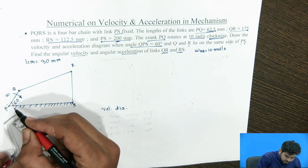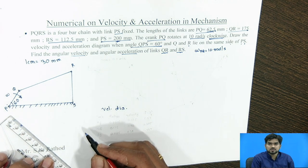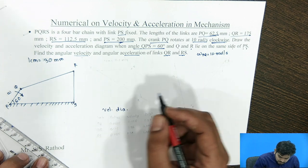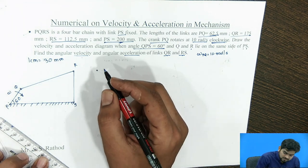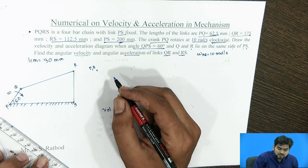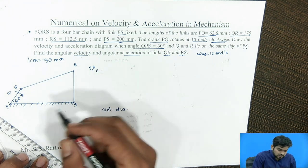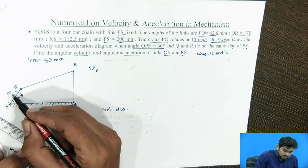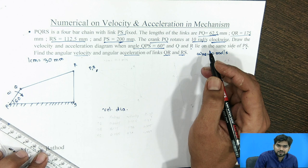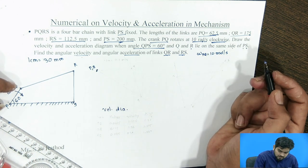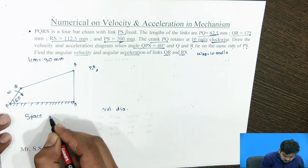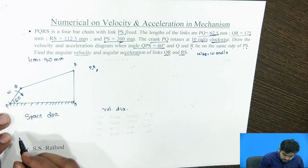For PQ, first we draw one point in the space at which the velocity is zero. P and S are the fixed points, so at those points the velocity is zero. We take one point representing P and S — this is P, S at which the velocity is zero. PQ makes an angular velocity of omega equal to 10 radian per second in the clockwise direction.